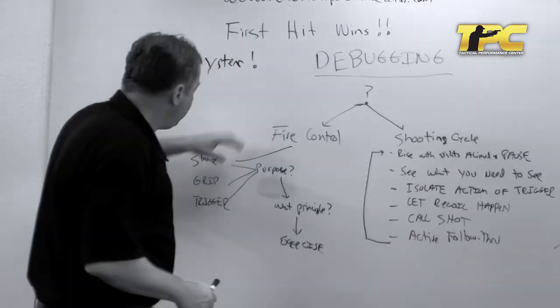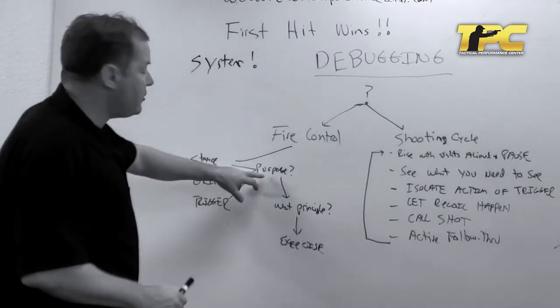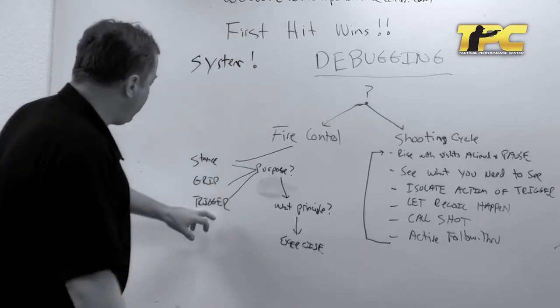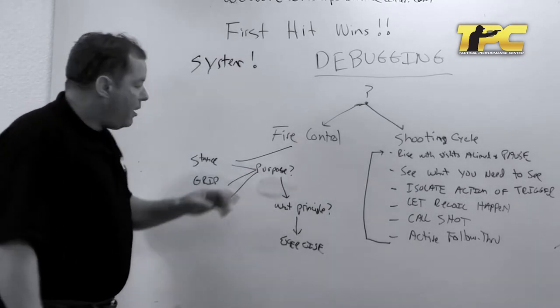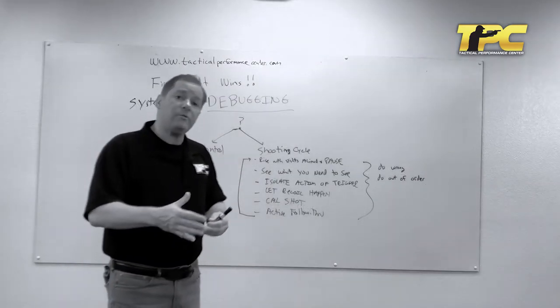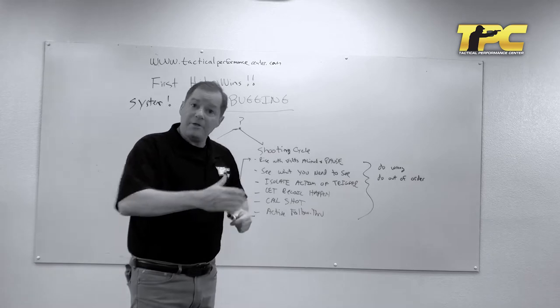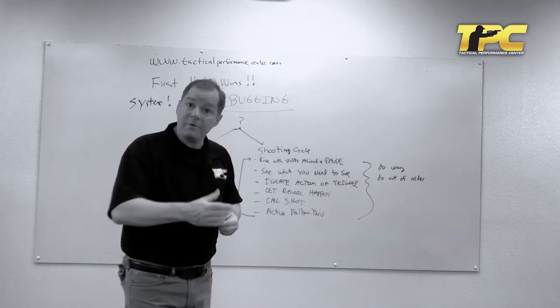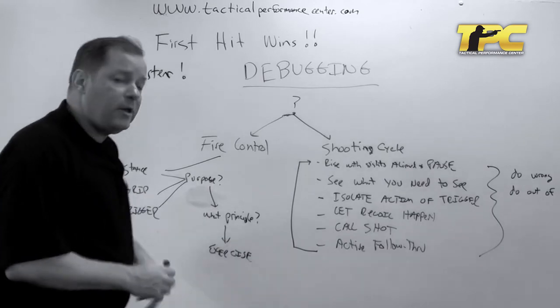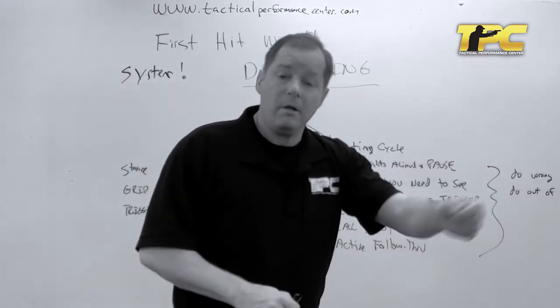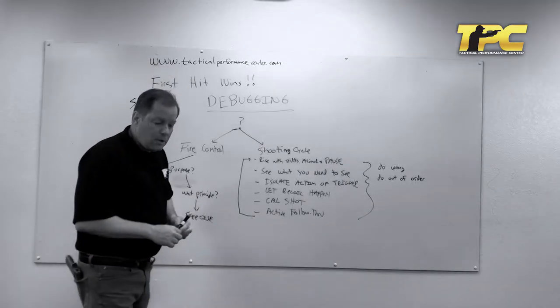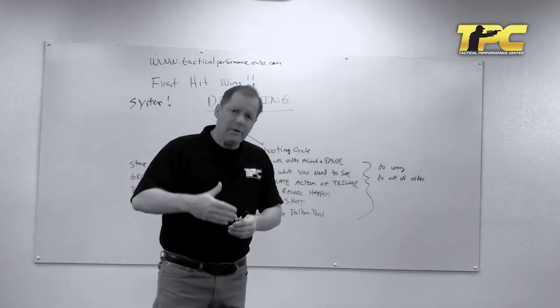When we look at students that are struggling or having an outcome they don't want, our thoughts turn to: what is the stance, or the purposes of the stance being met, or the purposes of the grip being met, or the purposes of the trigger being met? Now if they have a problem with the purpose, in other words, let's say a student is not managing recoil as effectively at higher speeds, well then we ask what principle could they apply better to help solve that purpose.